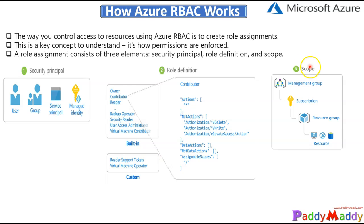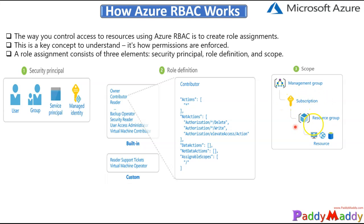The final element is scope — where you apply these role definitions. The top layer is the management group for managing your entire resources, followed by subscription, then resource groups, and then the individual resources placed within resource groups. You can apply role-based definitions at different layers — at the subscription layer, the resource group layer, or from the management group. That's where and how you apply role-based access.